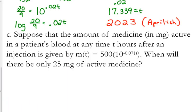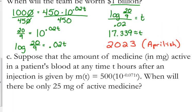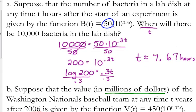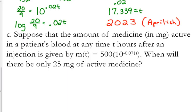All right, so we've got one more context here. Here's a medical application. Suppose that the amount of medicine in milligrams active in a patient's blood at any time t hours after an injection is given by M(t) equals 500 times 10 to the negative 0.071t. A little bit of explanation here, that number is negative in the exponent because the amount of medicine is going to be decreasing over time. The other two contexts that we've been talking about, the baseball team has been adding value, the bacteria have been growing, but in this case the medicine is decreasing in the bloodstream.